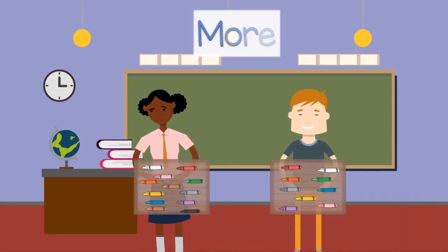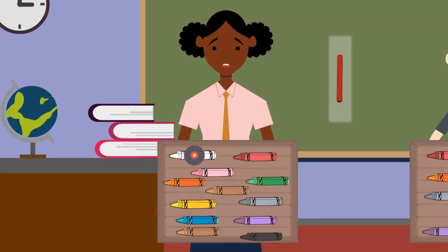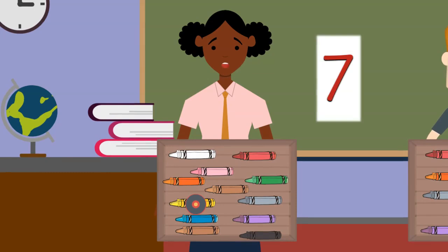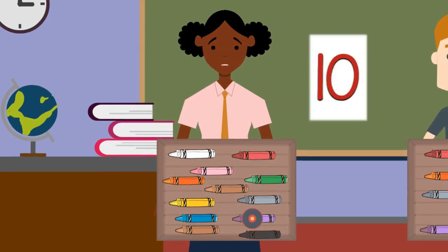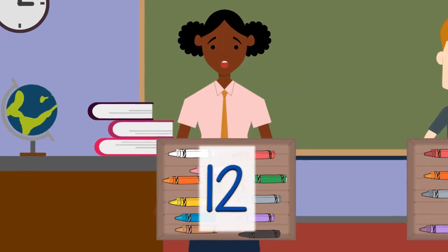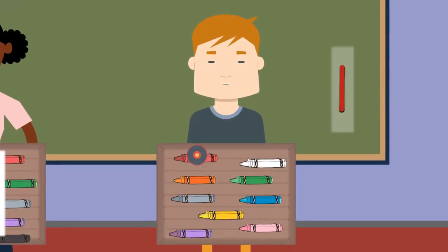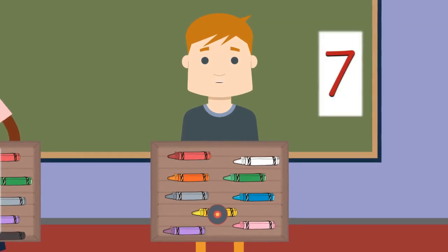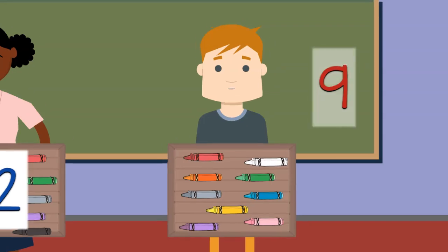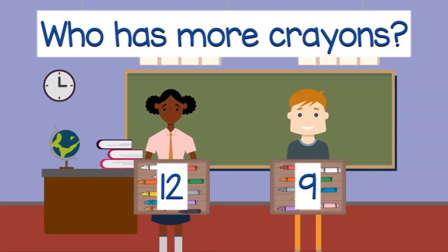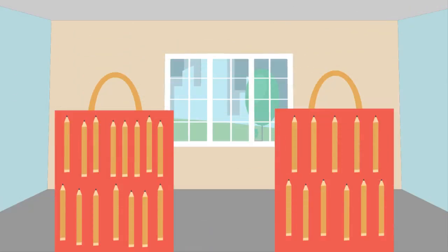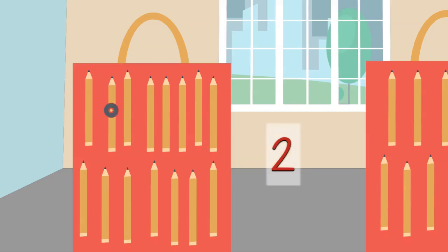Who has more crayons? I have 1, 2, 3, 4, 5, 6, 7, 8, 9, 10, 11, 12 — I have 12 crayons. I have 1, 2, 3, 4, 5, 6, 7, 8, 9 — I have 9 crayons. Who has more crayons? Yes, she has more crayons than him.